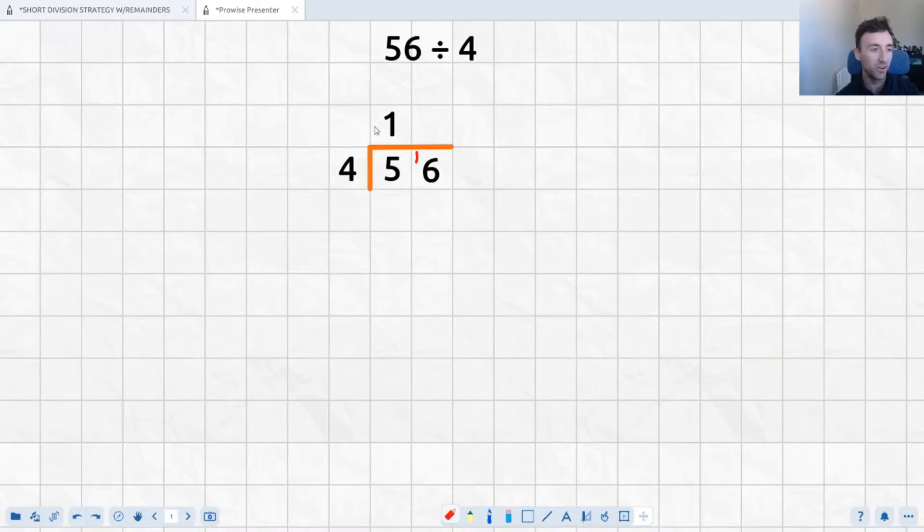So now we've got 4 goes into 5 one time, and then instead of 4 going into 6, it's how many times does 4 go into 16. So we know our 4 times tables really really well, and 4 goes into 16 four times. Now because there's no remaining numbers, it goes exactly into 16, we know that 56 divided by 4 is 14, and that's the bus stop method.